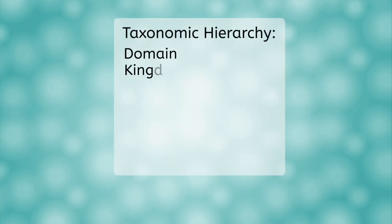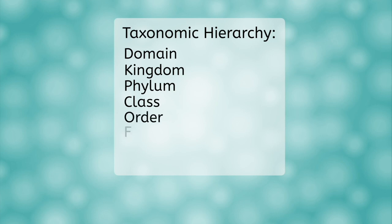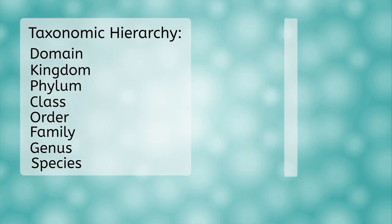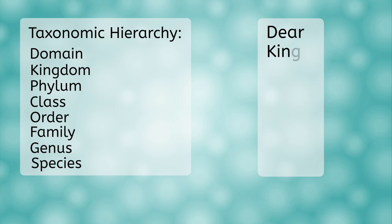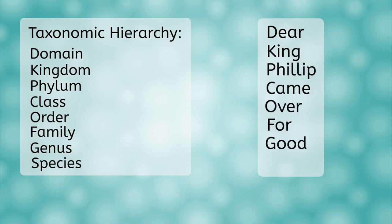The eight levels are: domain, kingdom, phylum, class, order, family, genus, and species. Are you wondering how you will ever remember this order? It's easy: Dear King Philip Came Over For Good Soup. The first letter of each word is the first letter of each classification level. Can you think of another mnemonic device to help you remember the order? Go ahead and pause the video so that you can record your own mnemonic device in the lesson notes.